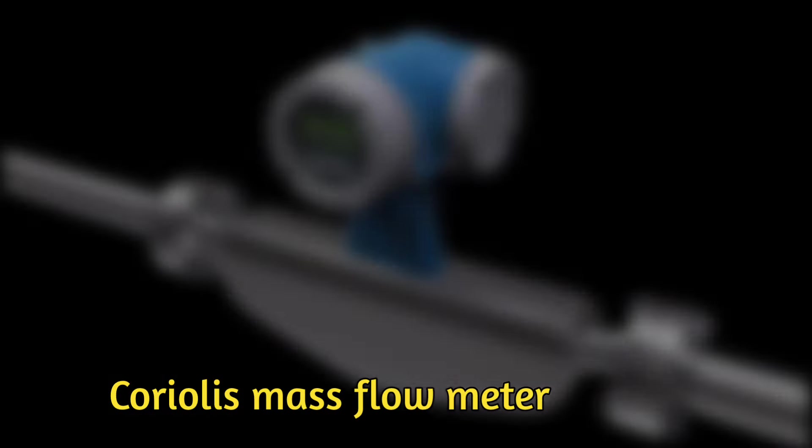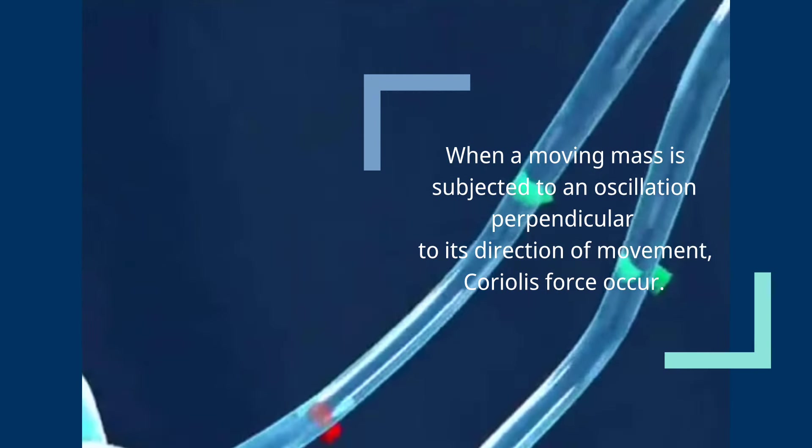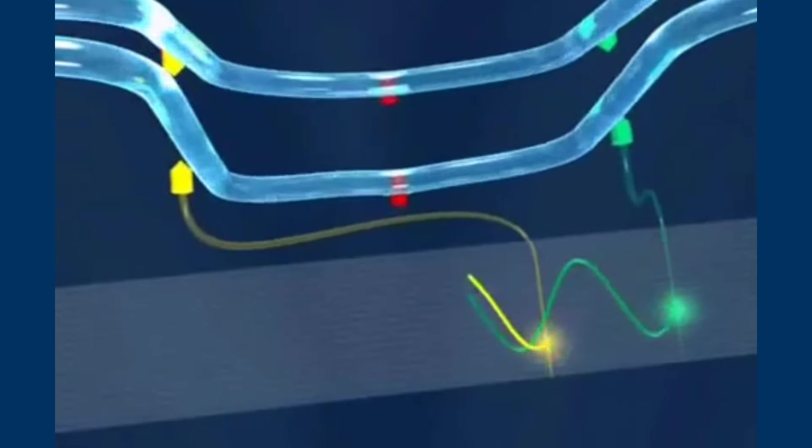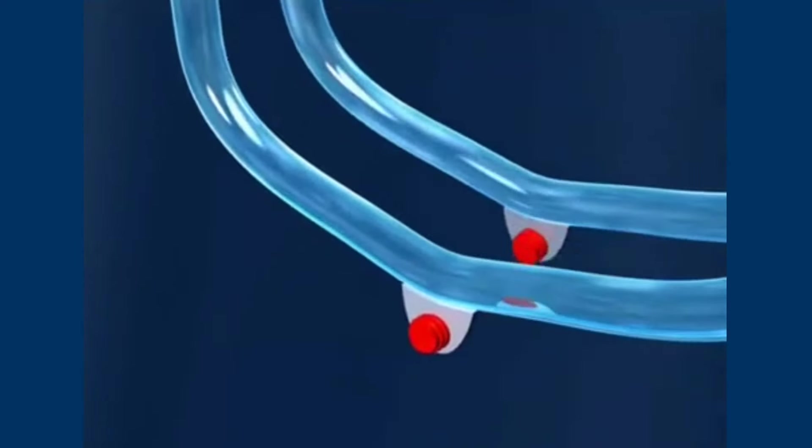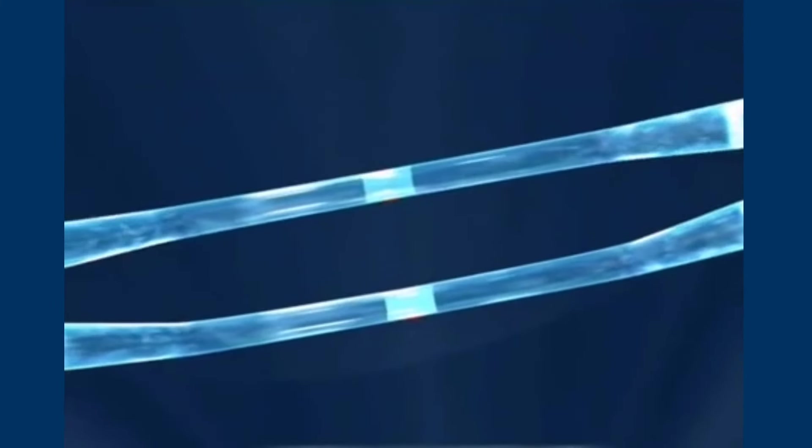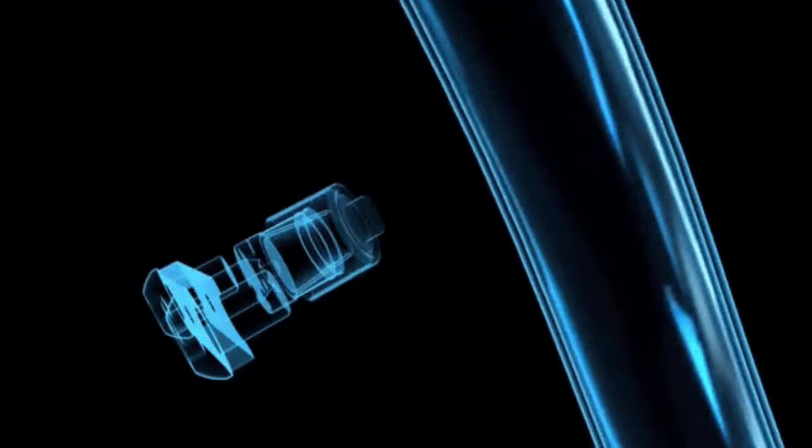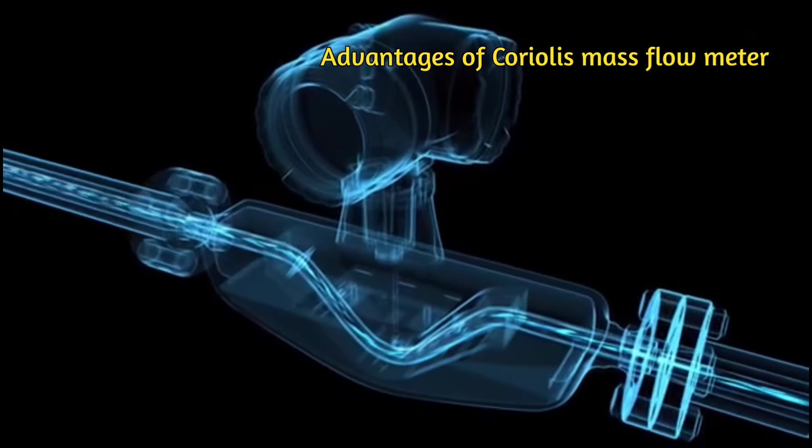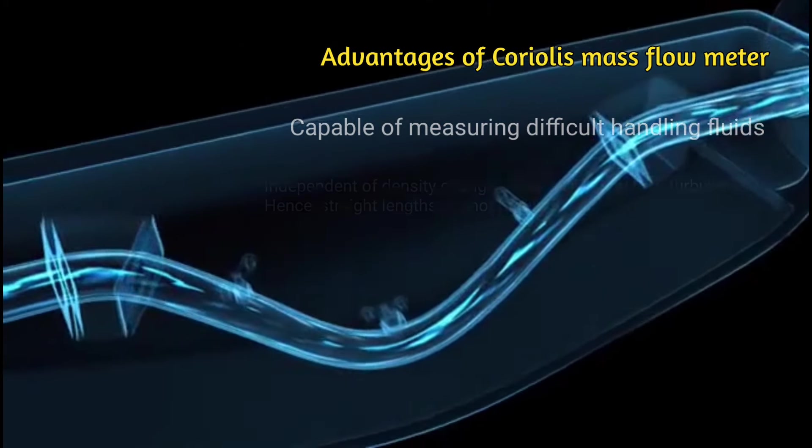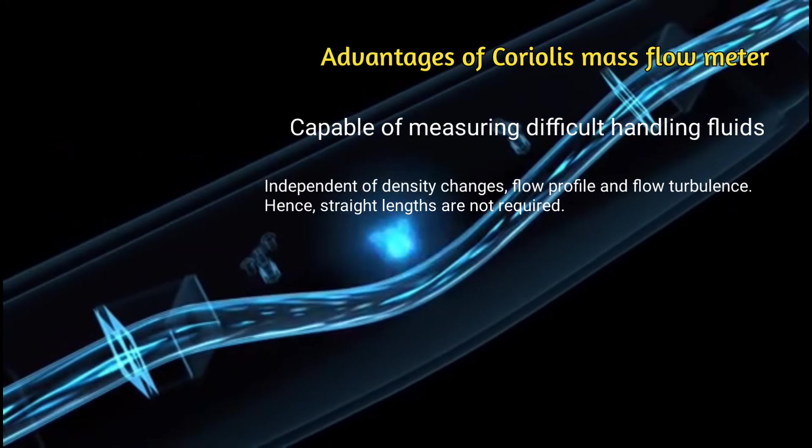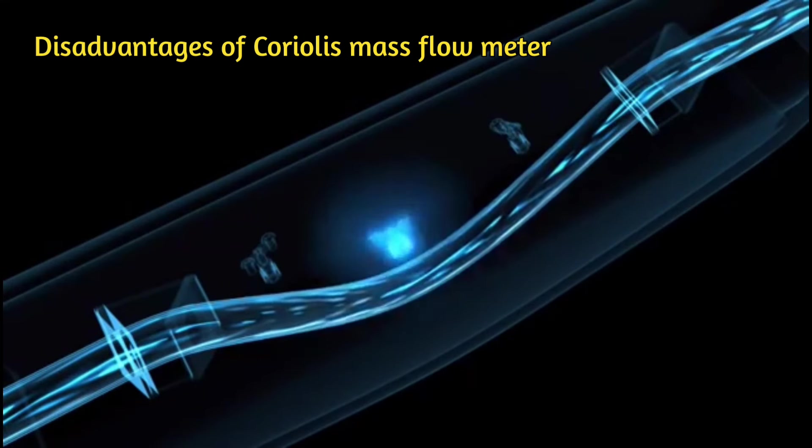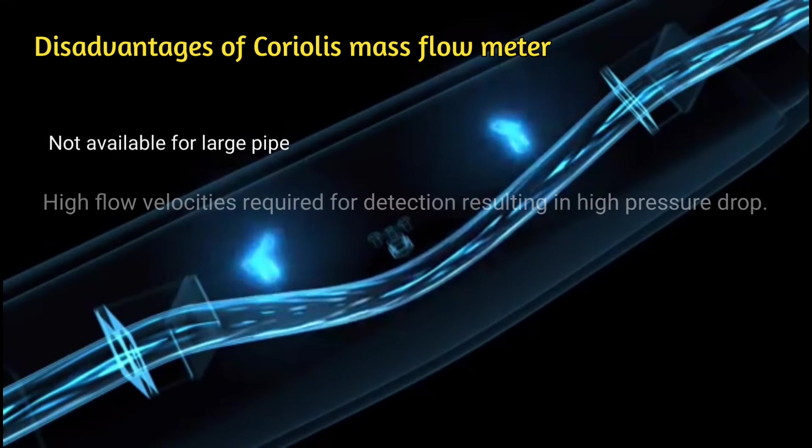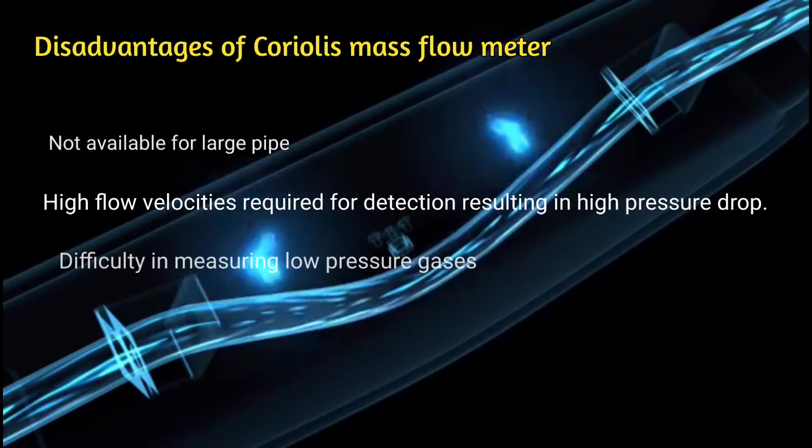Coriolis mass flow meter. When a moving mass is subjected to an oscillation perpendicular to its direction of movement, Coriolis force occurs depending on the mass flow. When the tube is moving upward during the first half of a cycle, the fluid flowing into the meter resists being forced up by pushing down on the tubes on the opposite side. The liquid flowing out of the meter resists having its vertical motion decreased by pushing up on the tube. This action causes the tube to twist. This twisting movement is sensed by a pickup and is directly related to the mass flow rate. Advantages: capable of measuring difficult handling fluids, independent of density changes, flow profile, and flow turbulence—hence, straight length are not required, no routine maintenance required since no moving parts. Disadvantages: not available for large pipe, high flow velocities required for detection resulting in high pressure drop, difficulty in measuring low pressure gases.